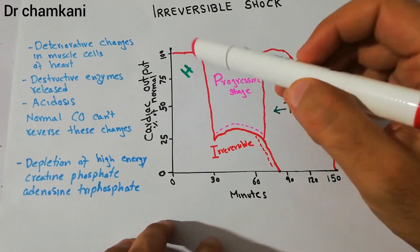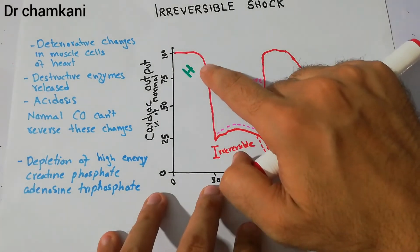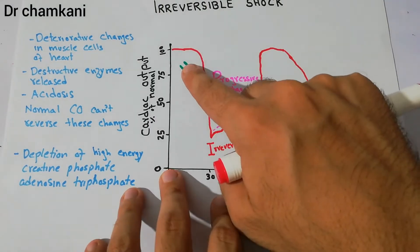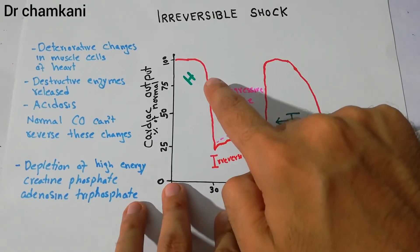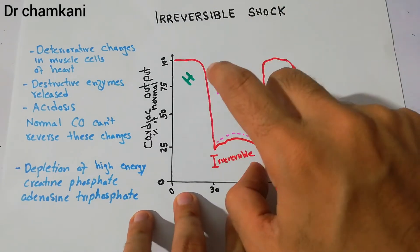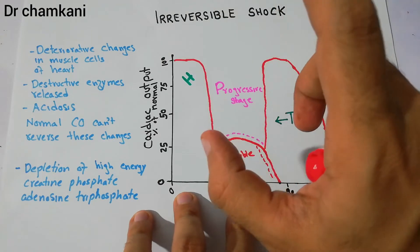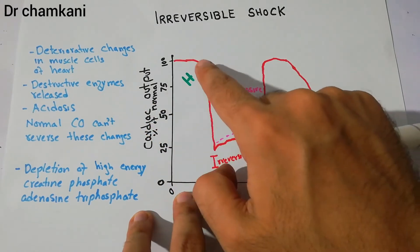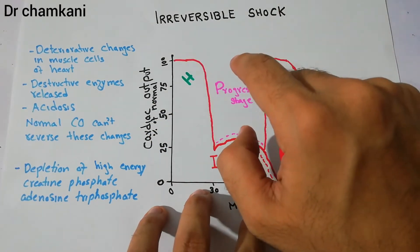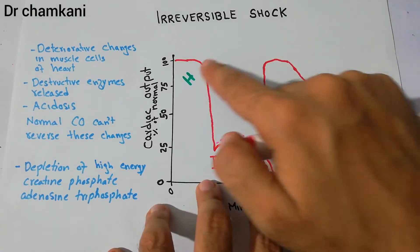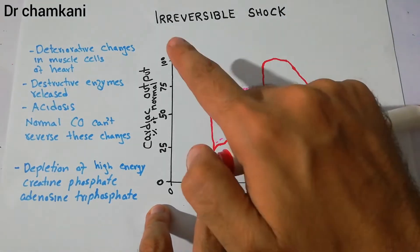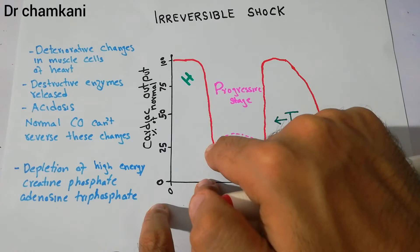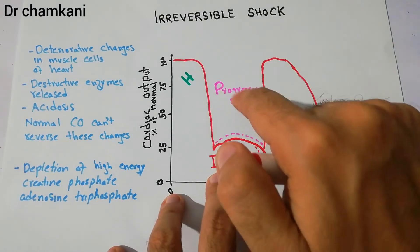At a certain point, hemorrhage has occurred and the cardiac output has suddenly fallen. If the hemorrhage is small, there will not be much fall in cardiac output and the body will recover on its own. But if the hemorrhage is huge and a lot of blood has been lost, there will be a big fall in cardiac output and the patient can directly enter into the progressive stage.